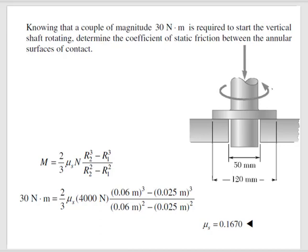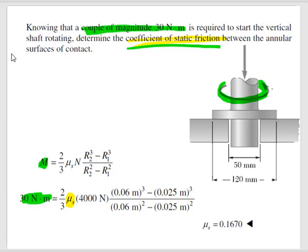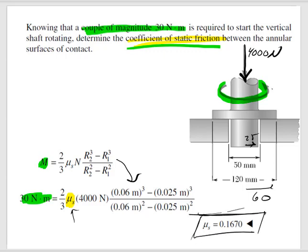Let's look at an example problem like you'd see in the book. We're given a couple of magnitude 30 newton-meters — that's the M in the equation — rotating a shaft. We want to find the coefficient of static friction between the surfaces of contact. We're also given a 4000-newton force pushing down on it, and the two radii: half of 50 mm and half of 120 mm. We can just plug and chug into the equation. The only unknown is the friction coefficient, so it's very straightforward.